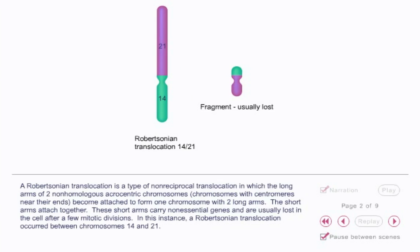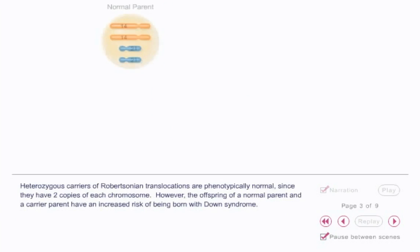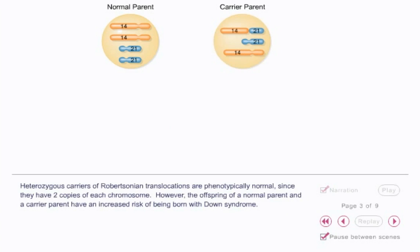In this instance, a Robertsonian translocation occurred between chromosomes 14 and 21. Heterozygous carriers of Robertsonian translocations are phenotypically normal since they have two copies of each chromosome.